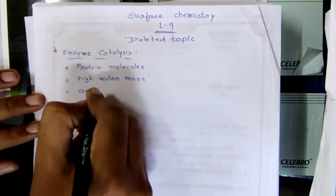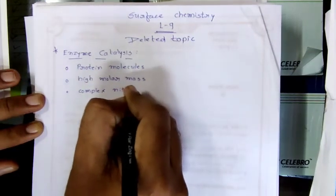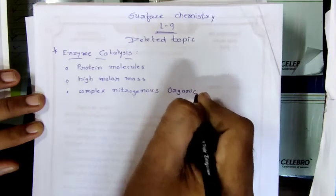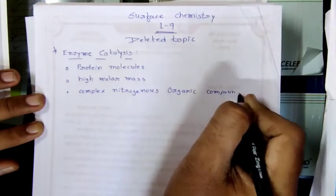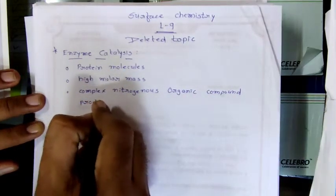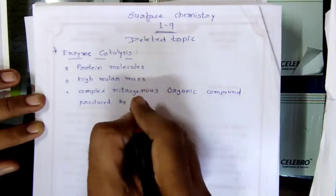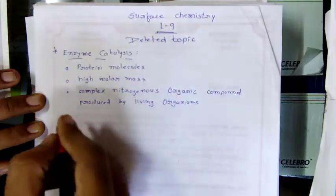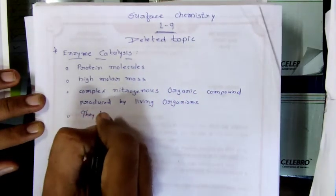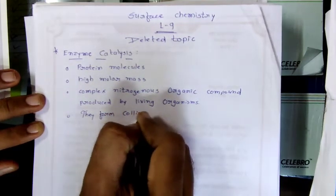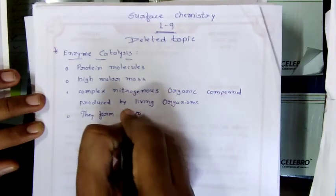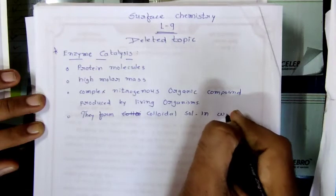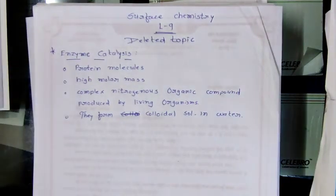What type of compounds are enzymes? They are complex, nitrogenous organic compounds produced by living organisms. They form colloidal solutions in water.